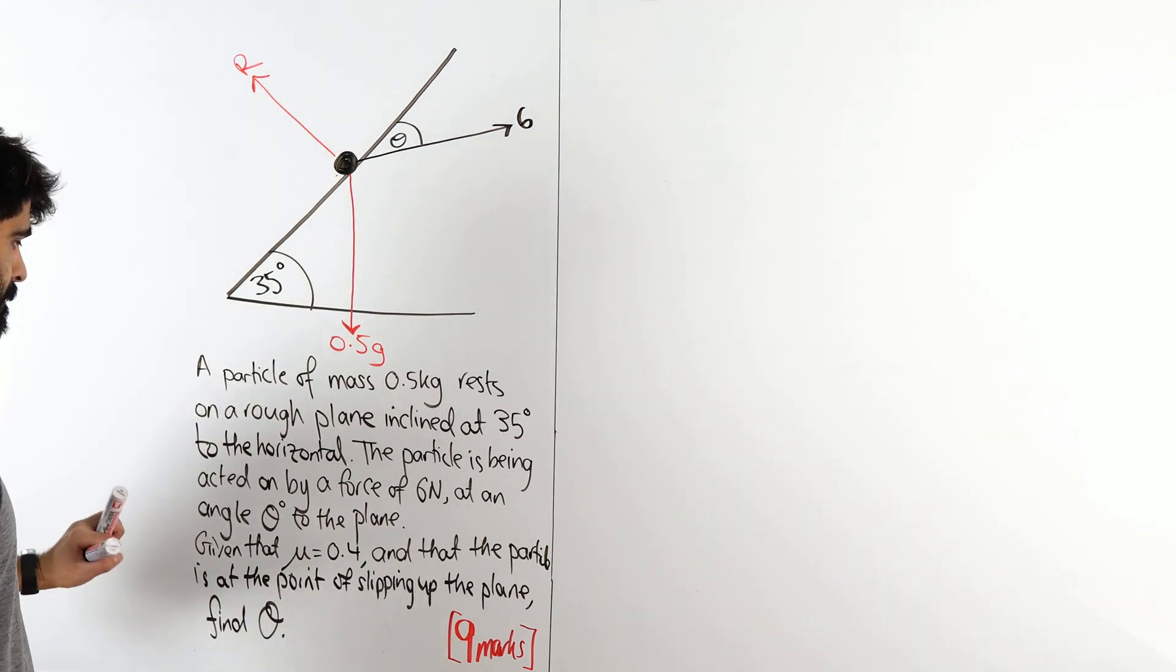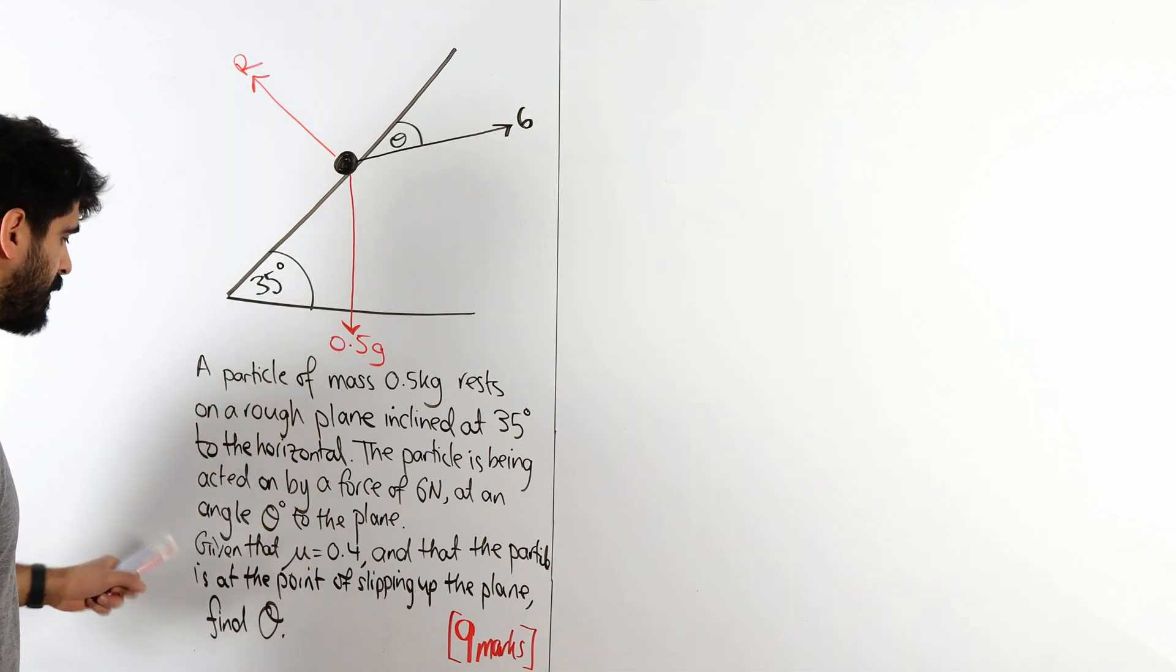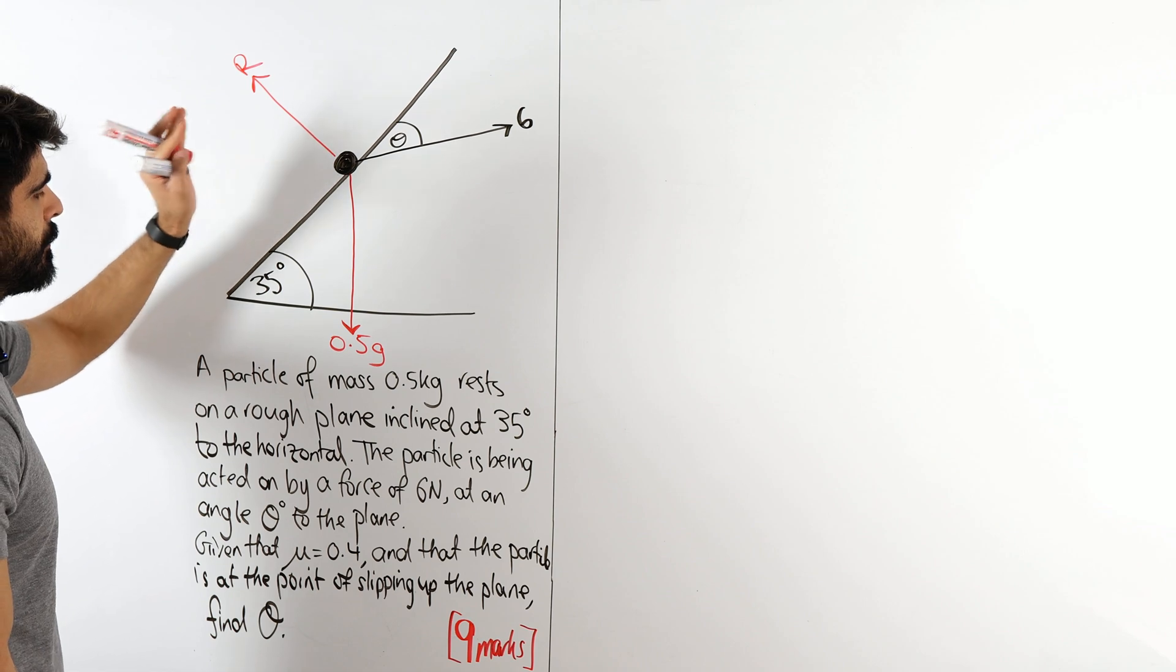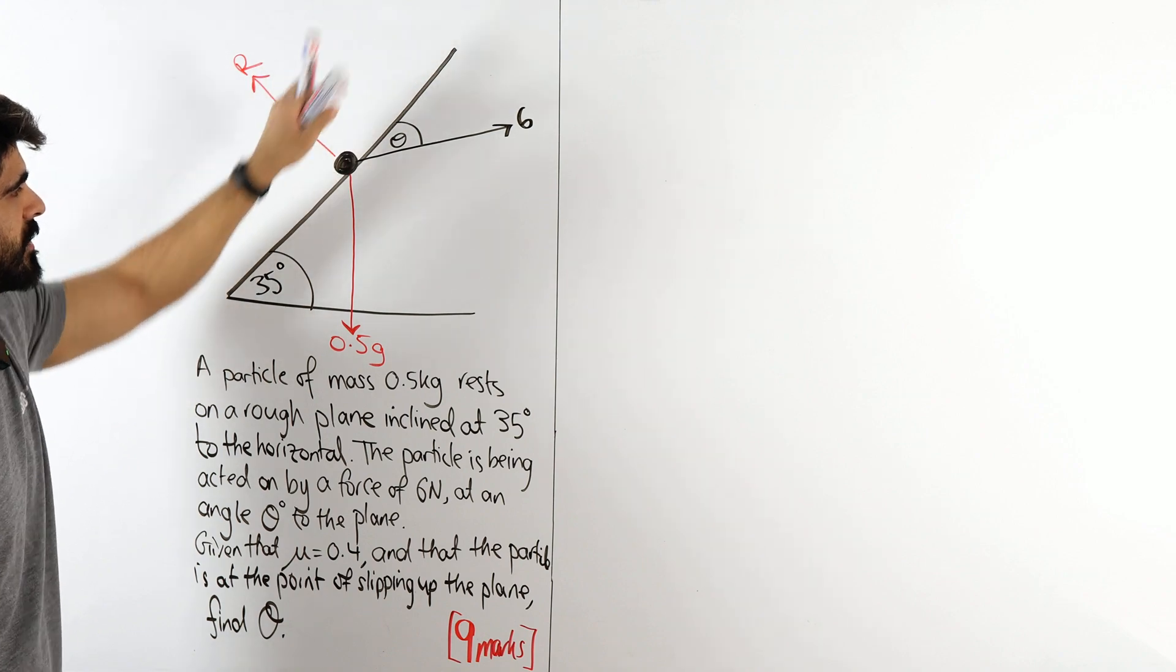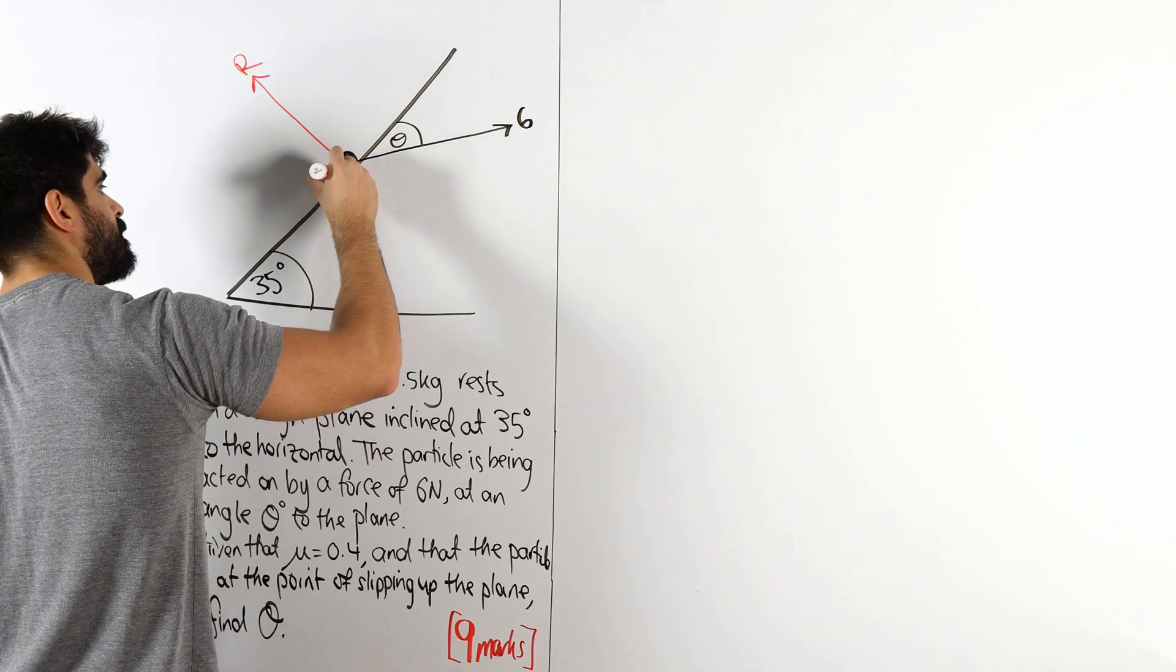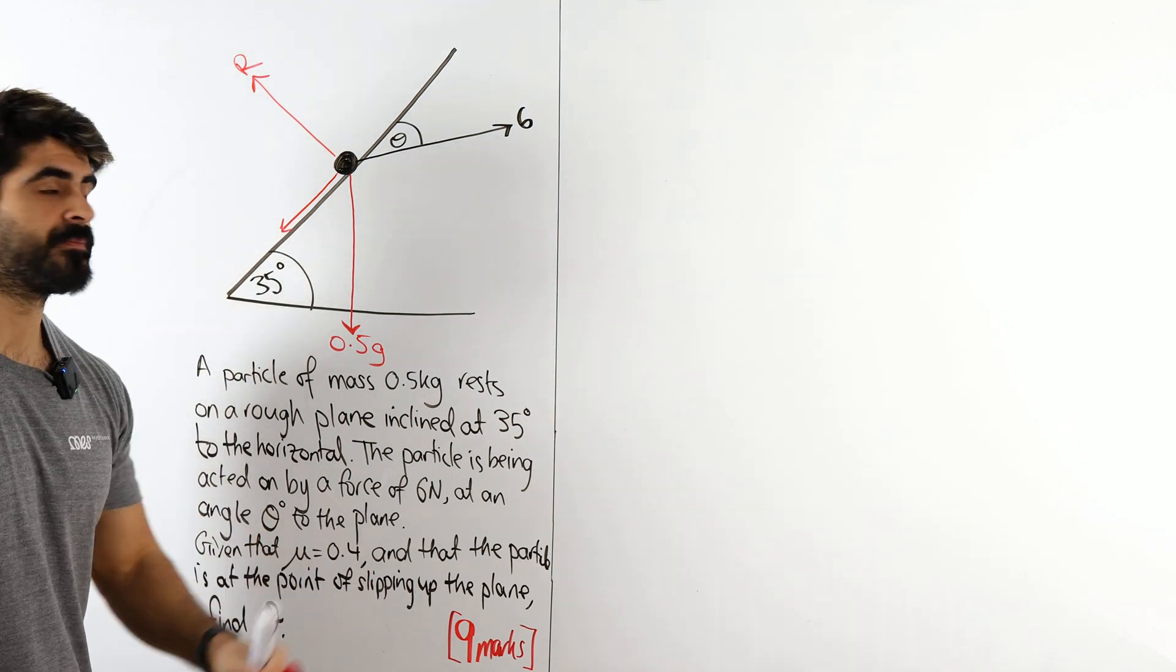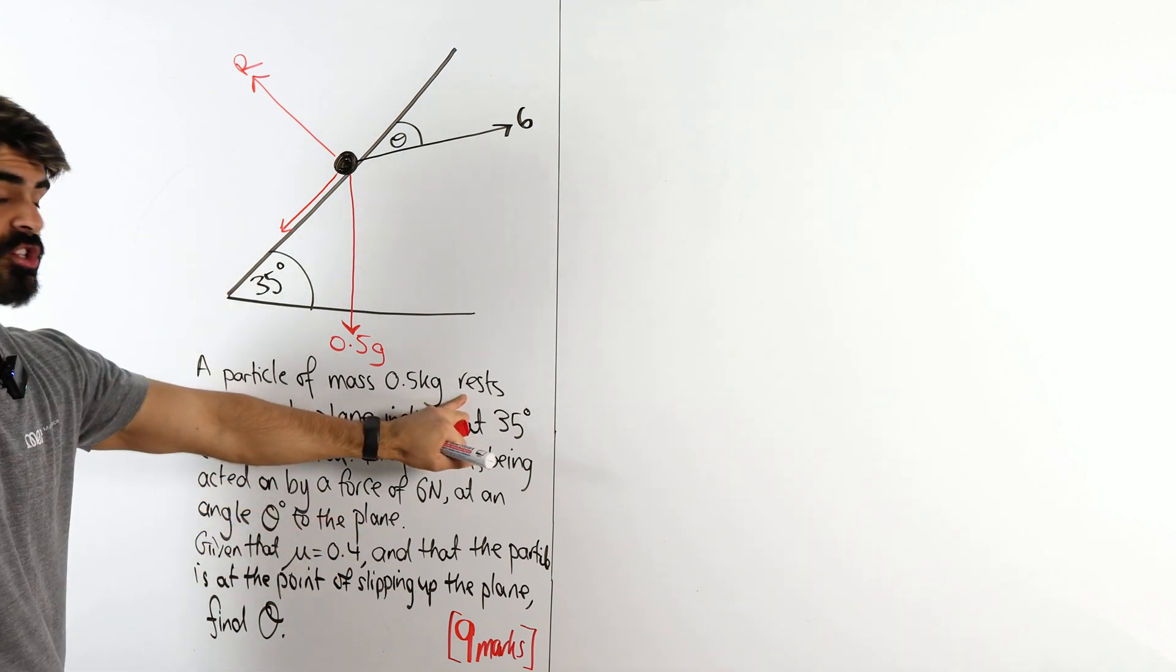Given that mu is 0.4, that's telling us about the friction, and the particle is at the point of slipping up the plane. So it's not moving. The particle is not moving, but it wants to move up this way. So if it wants to move up this way, it means that the friction force is pointing down the plane.